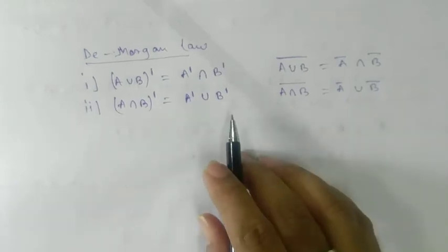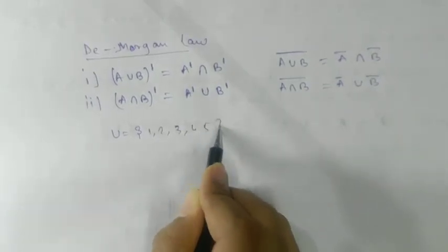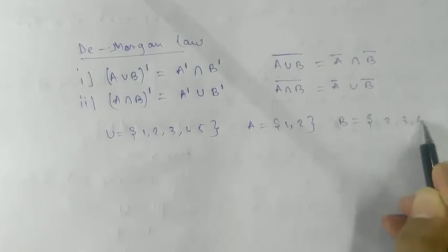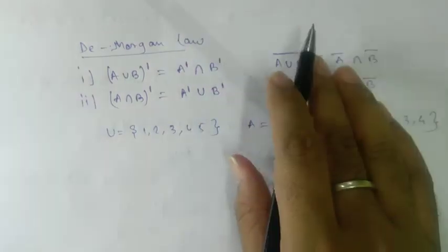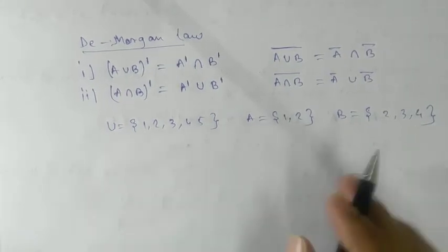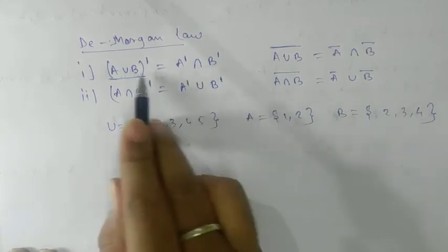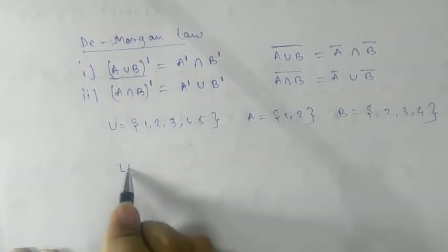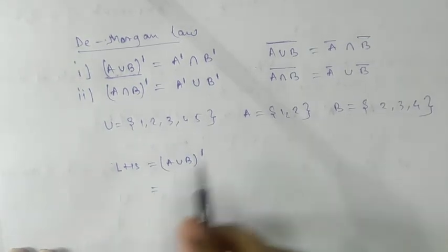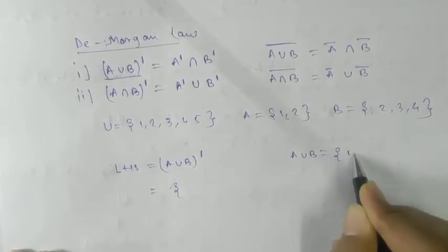Let's verify with an example. We already have universal set {1, 2, 3, 4, 5}, A = {1, 2}. Now let's take B = {2, 3, 4}. For LHS of the first De Morgan's law, we compute A union B complement. First, A union B = {1, 2, 3, 4}.